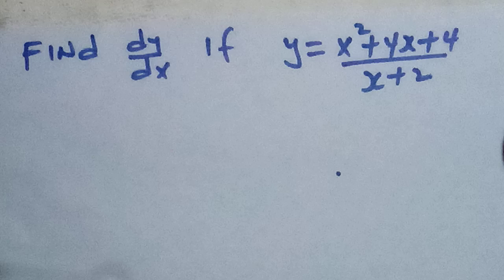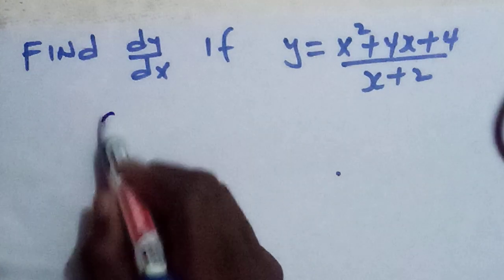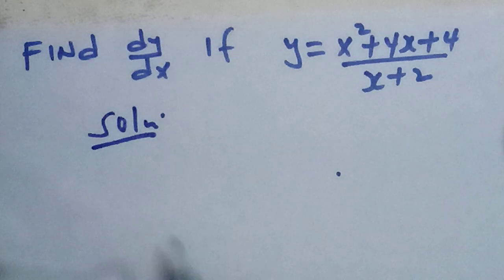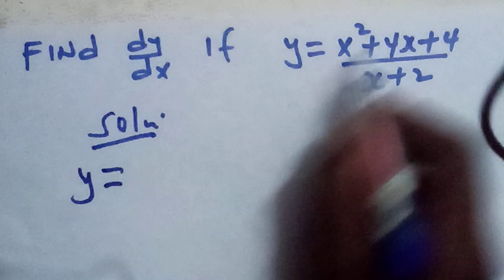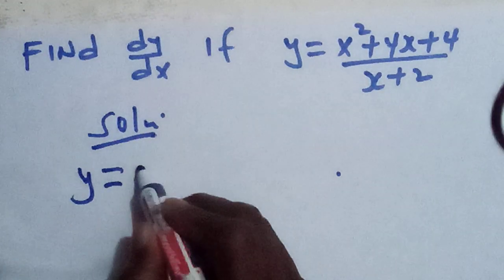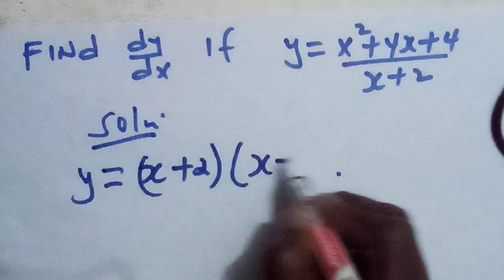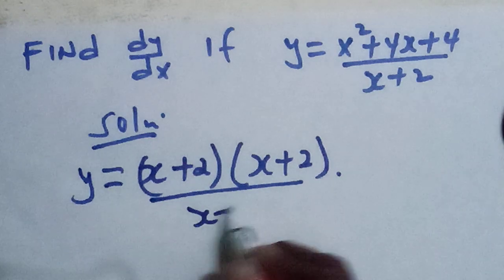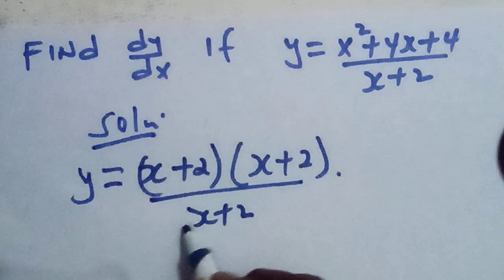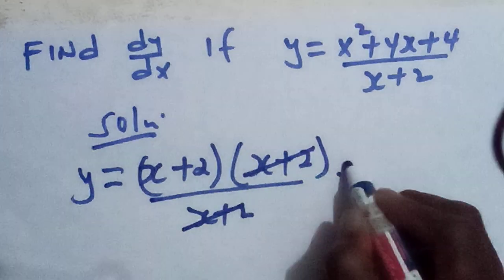Now to work on this question, we can factorize it so that we make it linear. The solution here: y can also be written, if we factorize the numerator, we have (x + 2)(x + 2) over (x + 2). Now realize that this will cancel out.